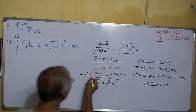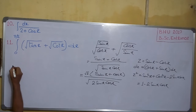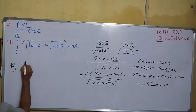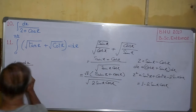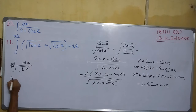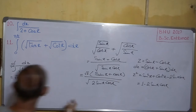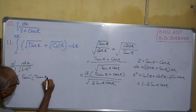So this sum we can rewrite: we take √2 outside. The numerator (sinx + cosx)dx can be written as dz. And 2·sinx·cosx in the denominator can be written as 1 - z². So this integral equals √2 · sin⁻¹(z). Now replacing z by sinx minus cosx, it becomes sin⁻¹(sinx - cosx).